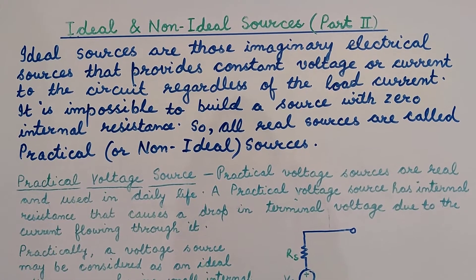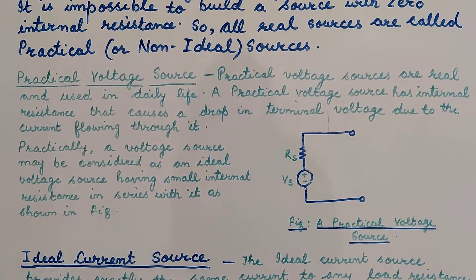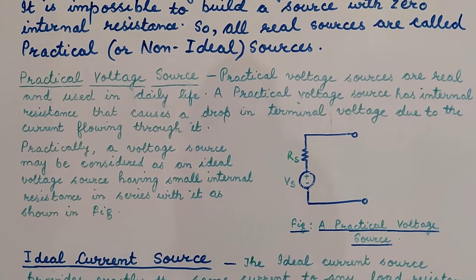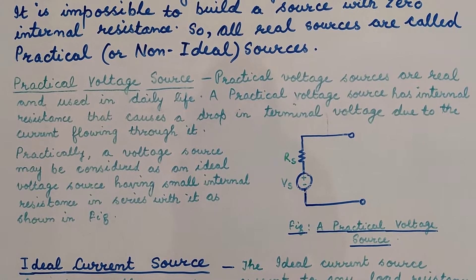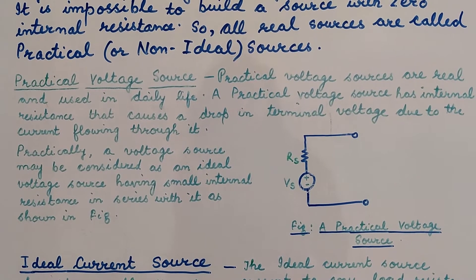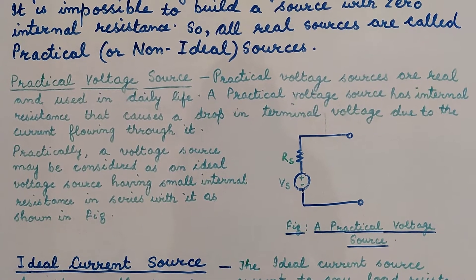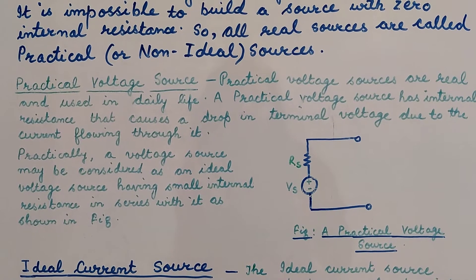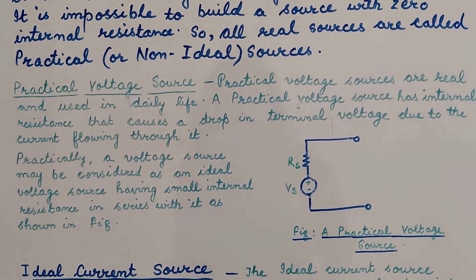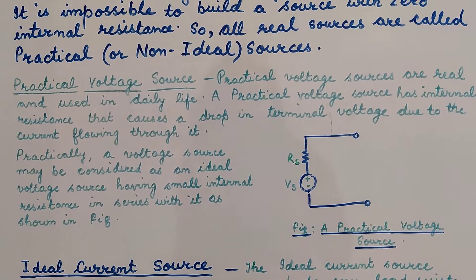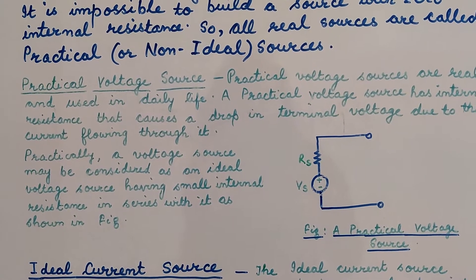Now let us consider what is a practical voltage source. The practical voltage sources are the real sources which we use in our daily life. A practical voltage source has some internal resistance which will cause a drop in the terminal voltage due to the current flowing through it. Practically, a voltage source can be considered as an ideal voltage source having a small resistance connected in series with it.